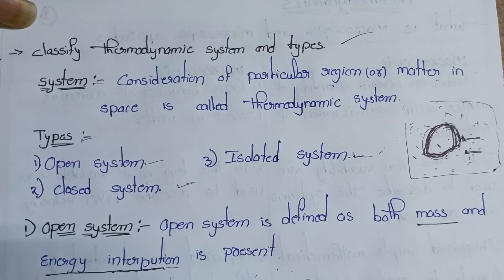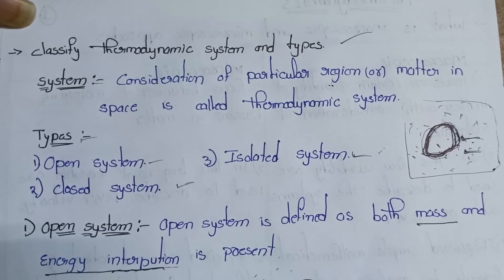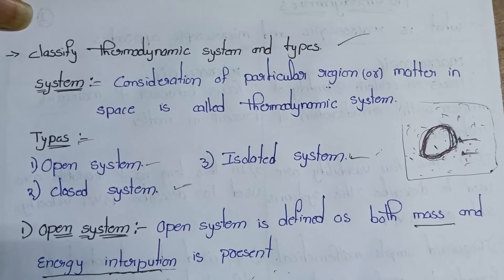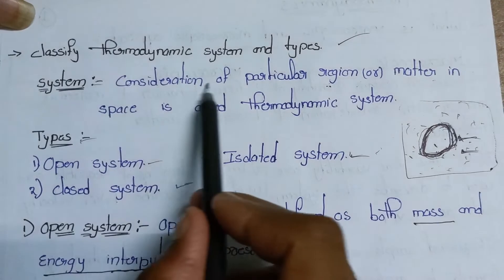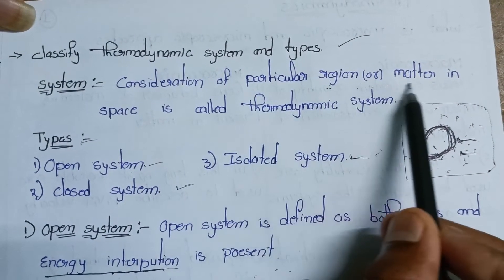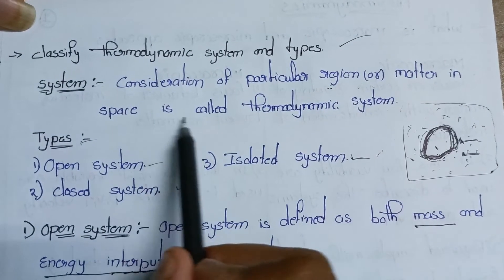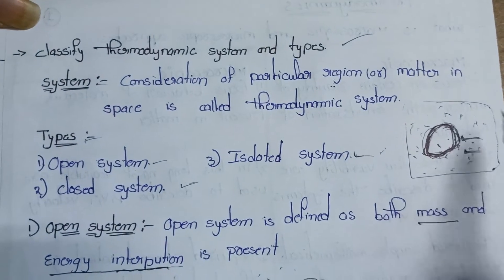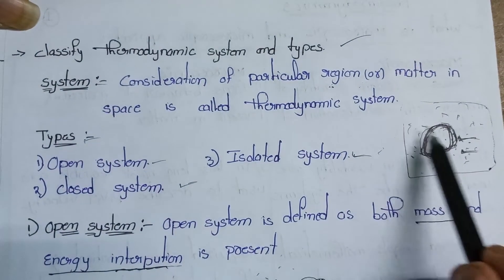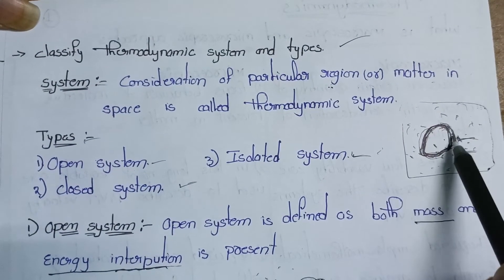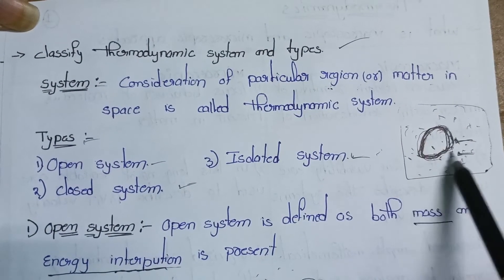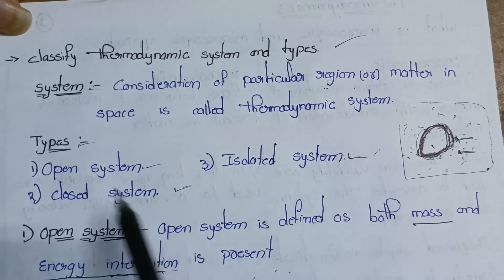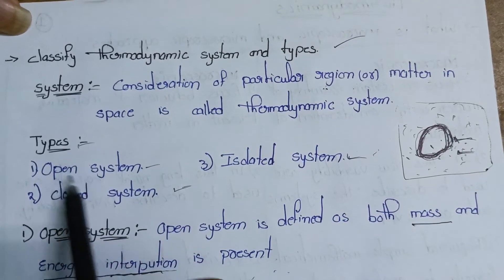What is a thermodynamic system? A thermodynamic system is the consideration of a particular region or matter in a space. We will consider a volume in that space. There are three types of thermodynamic systems.